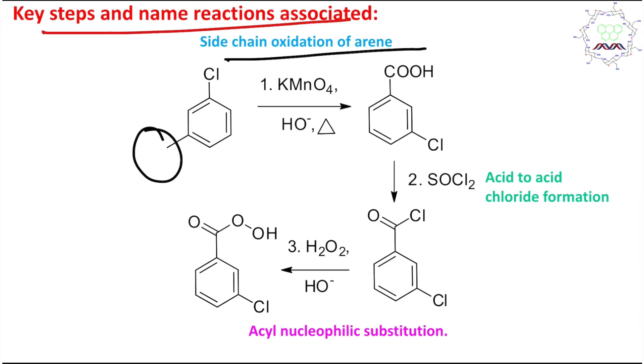Later on this carboxylic acid will be converted into acid chloride. Third step is acyl nucleophilic substitution where hydroperoxide anion is acting as a nucleophile to produce this peracid or peroxy acid.